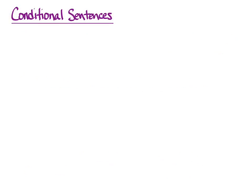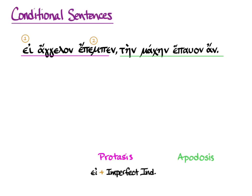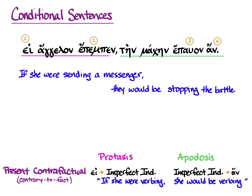Now, εἰ ἄγγελον ἔπεμπεν, τὴν μάχην ἔπαυον ἄν. We see our clauses and check the 'if' — it's εἰ. The verb of the protasis is ἔπεμπεν, so that's imperfect indicative. The verb of the apodosis is also imperfect indicative, ἔπαυον. And we do have an ἄν — so we've got Present Contrafactual. 'If she were verbing, she would be verbing.' Our translation is: 'if she were sending a messenger, they would be stopping the battle.' But we know she's not, and so they aren't. And that's a beautiful present contrary to fact.